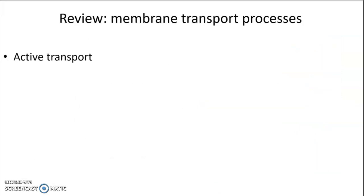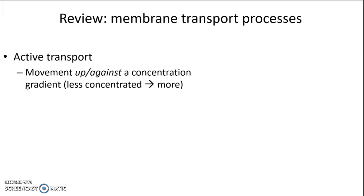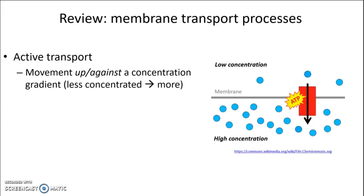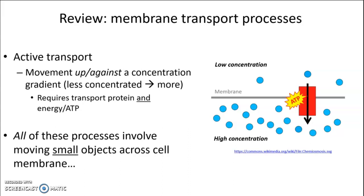We also learned about active transport, which is movement up or against a concentration gradient — from where a molecule is less concentrated to where it is more concentrated. The molecules are moved against their concentration gradient from low concentration to high through a transport protein. It also requires energy in the form of ATP. But all of these processes involve moving relatively small objects across the cell membrane, ones that can wiggle between the phospholipids or move through a small embedded protein.